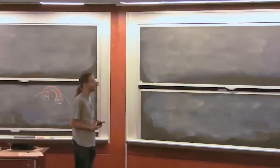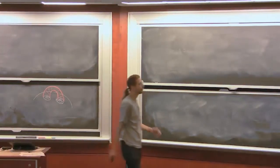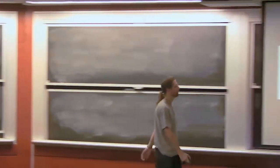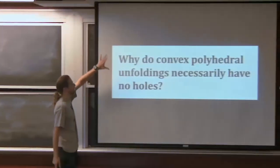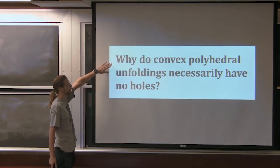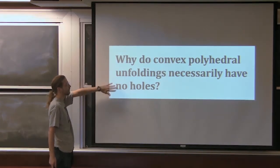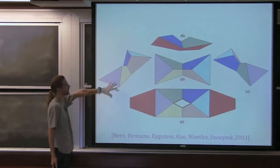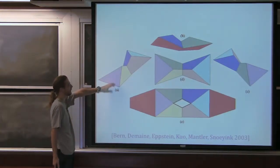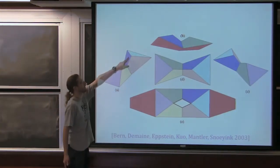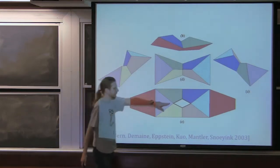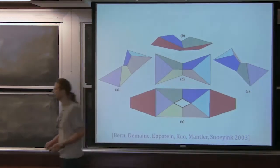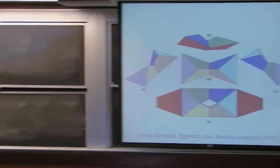Things get more complicated when you have boundary, which we usually call holes. The next question is about holes in the unfoldings. I claim that convex polyhedra, when you unfold them, never have holes in the unfolded form. This is in contrast to a non-convex example, which you can unfold by cutting two edges and get a little hole. The natural question is: why isn't this possible for convex polyhedra?